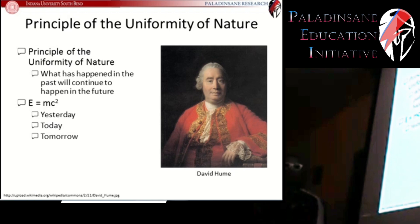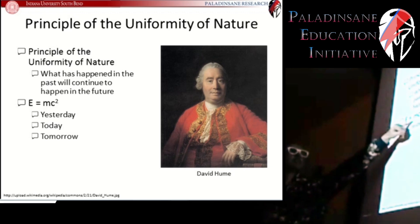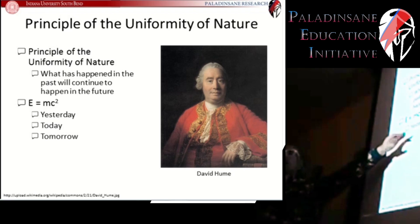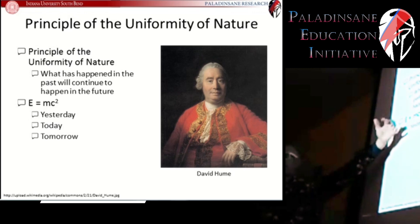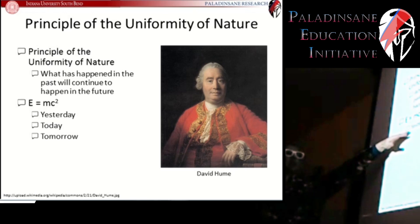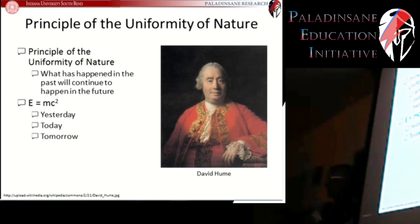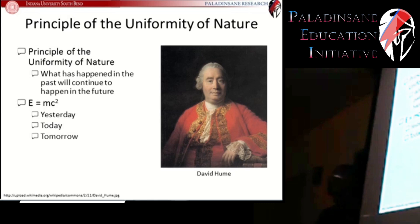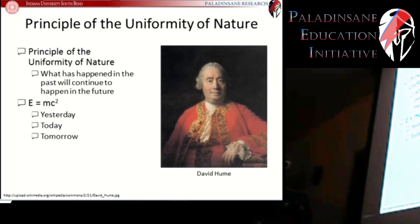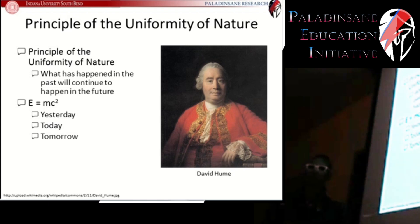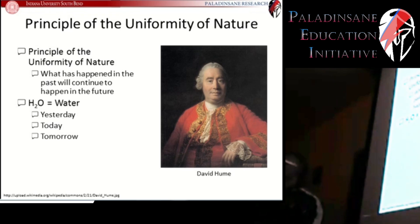If you look at examples from physics, E=MC² — energy equals mass times the speed of light squared — was true yesterday. When they tested it after Einstein came up with this equation, they found that yes, E=MC². If you went to the CERN super collider today or another physics laboratory and tested this, you would find that this equation is also true today. The assumption is that it will continue to be true tomorrow — 20 or 30 years from now, E=MC² will still hold.